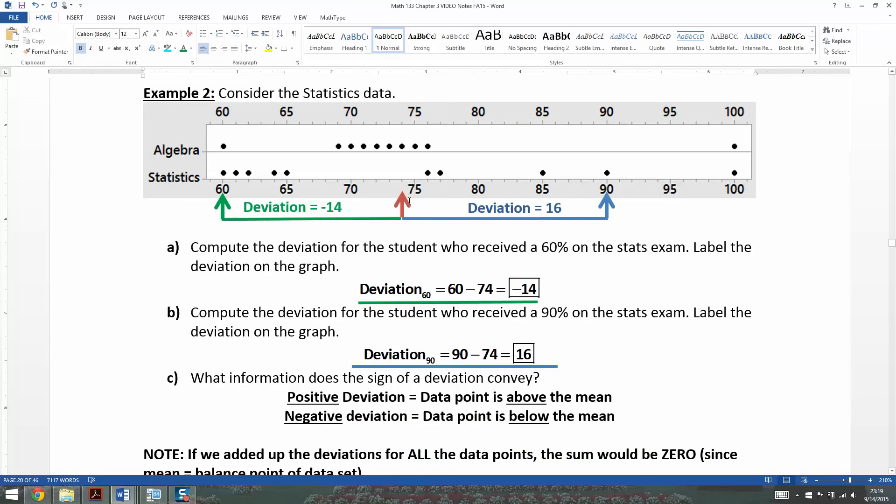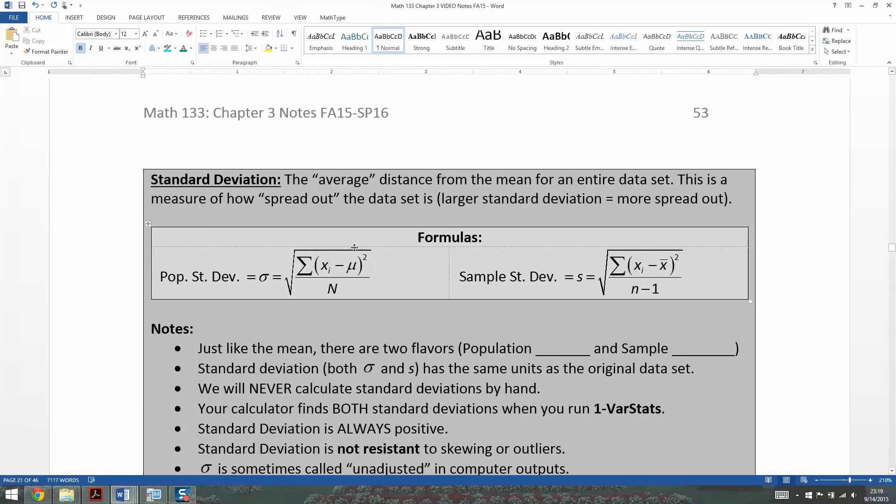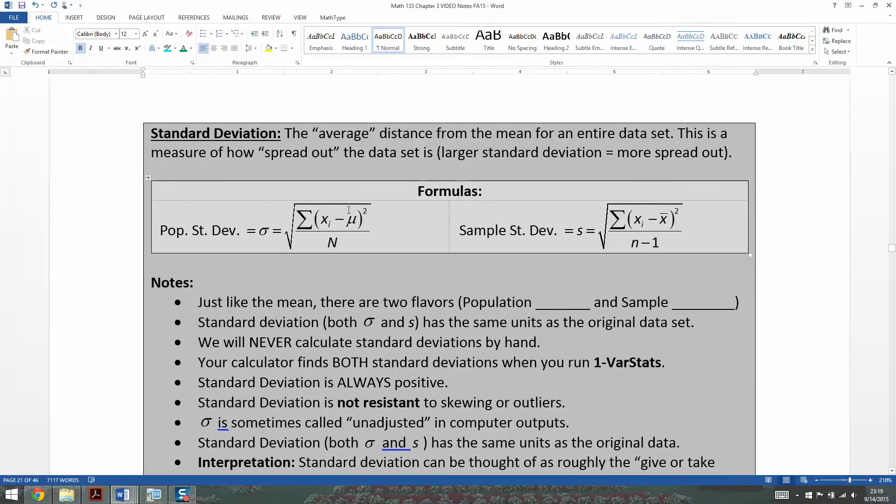So to fix that problem, what we're going to do is we're going to turn them all positive, and we turn them all positive by squaring them. You see in the formula right here, they're all squared. That's what we're going to do. So we're going to use that squaring feature to turn the deviations, because that's what these are.